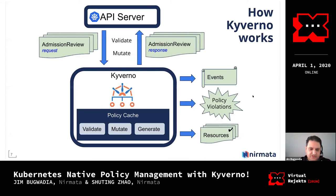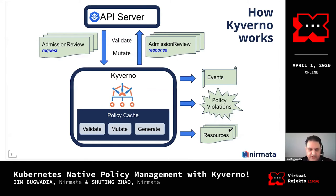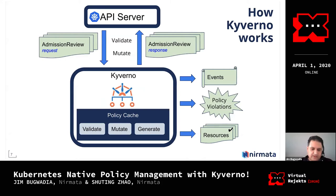Kyverno is an admission controller. When it gets a request from the API server, it's in the format of an admission review. Kyverno has policies as first-class resources — they're custom resources in Kubernetes — as are policy violations and other outputs. Kyverno caches these in memory for fast processing, and our guarantee for admission requests is under two seconds to process any policy or rule. Because this cache is built up in memory, it's extremely fast.